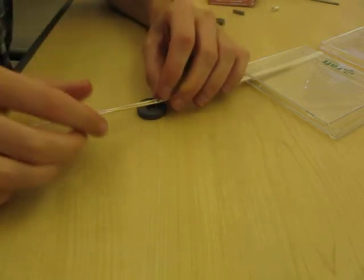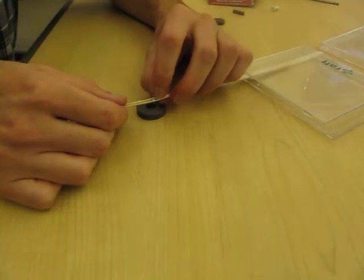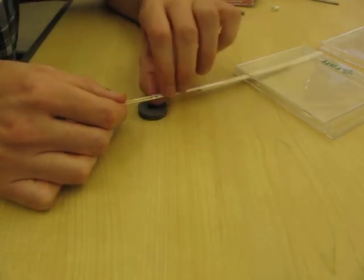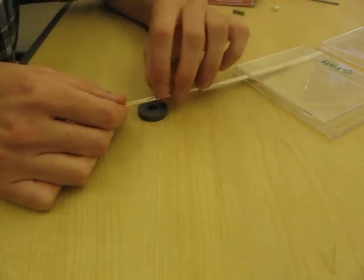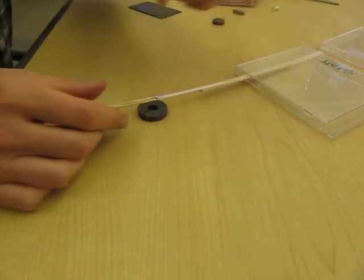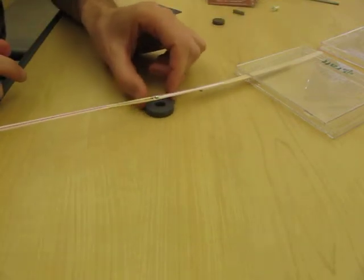You can also adjust the rare earth magnet by pushing it down further in the hole or pushing it back up to get a little bit further away so you can get the optimal distance between your probe magnet and your sample magnet.